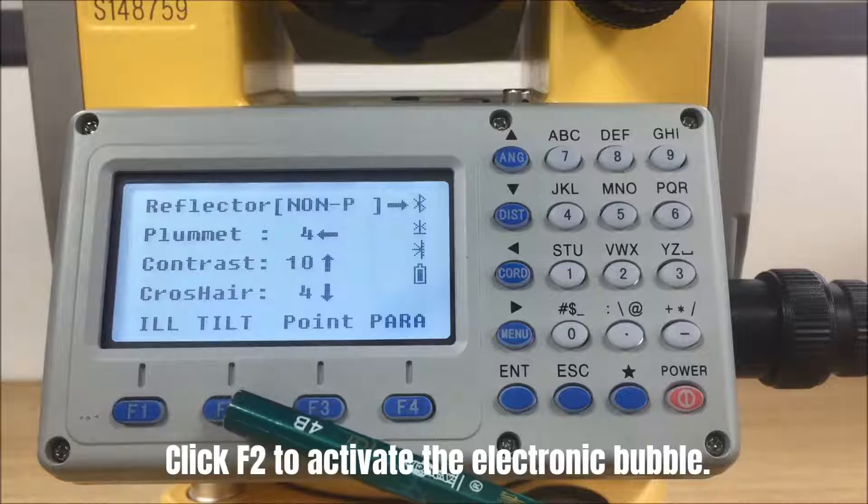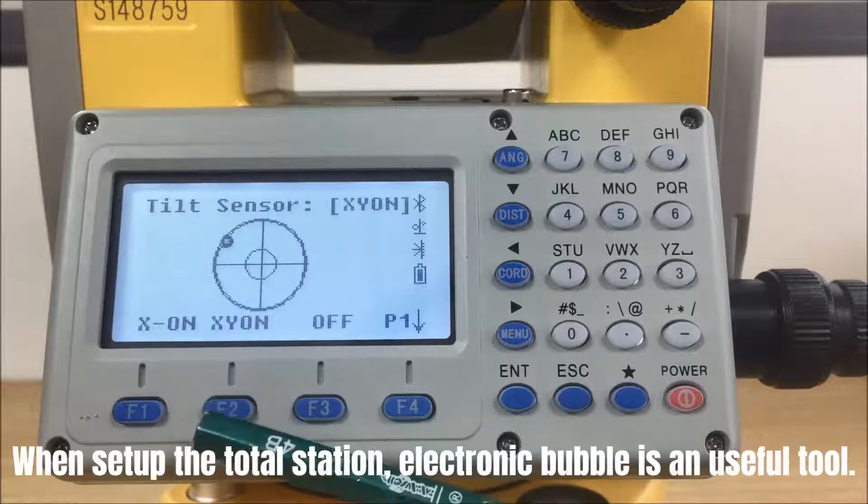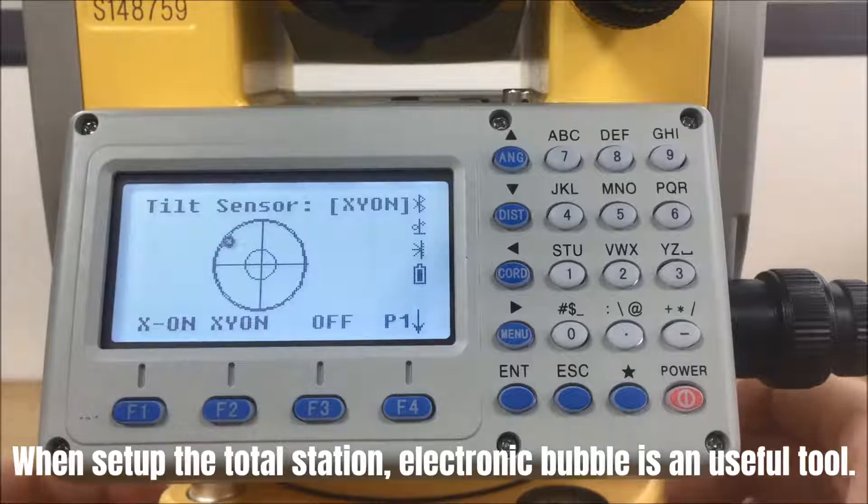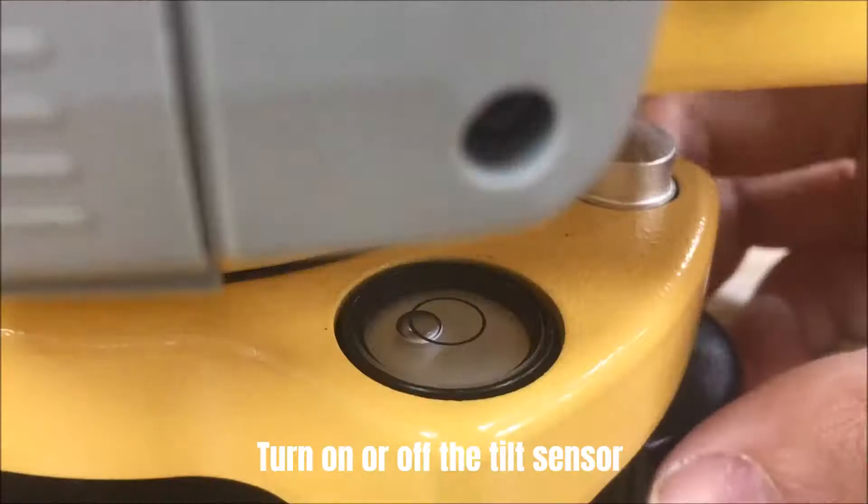Click F2 to activate the electronic bubble. When set up the total station, the electronic bubble is a useful tool to turn on or off the tilt sensor.